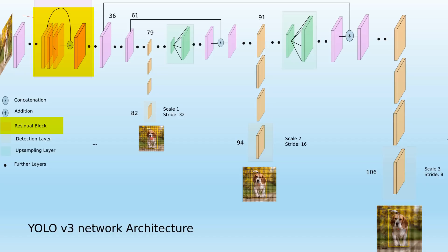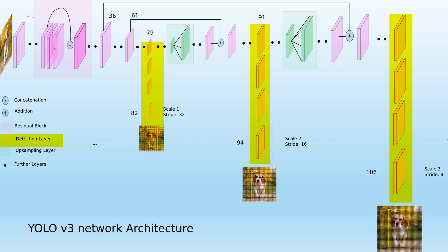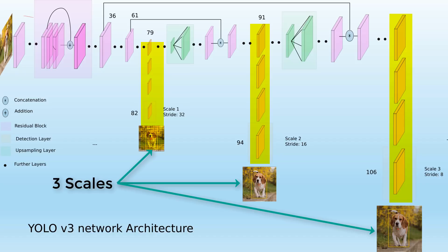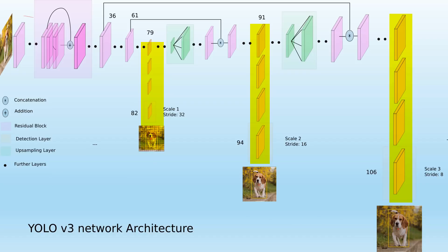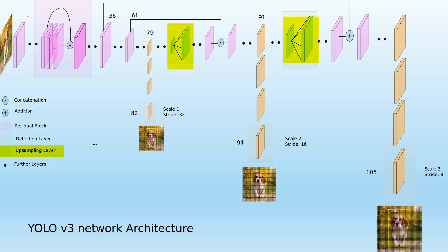The first layer type is the residual block — basically a residual network (ResNet), shown in pink. In YOLO version 3, detection happens at three stages or three scales: first with stride 32, then stride 16, then stride 8. You can see the network detecting from the input image three times at different scales. The detection layer is shown in yellow. The green part is the upsampling layer — every time you change scale, the image is upsampled, so you can see it happening at each of the three stages.